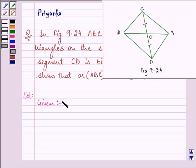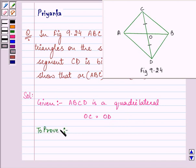Let us start with our solution. ABCD is a quadrilateral and OC is equal to OD. We need to prove that area of ABC is equal to area of ABD.